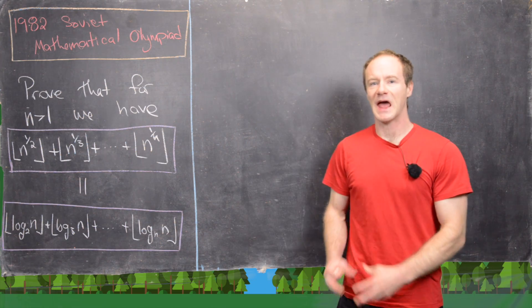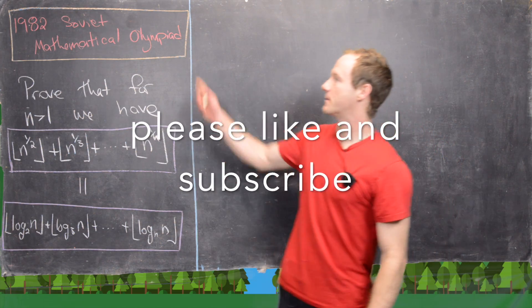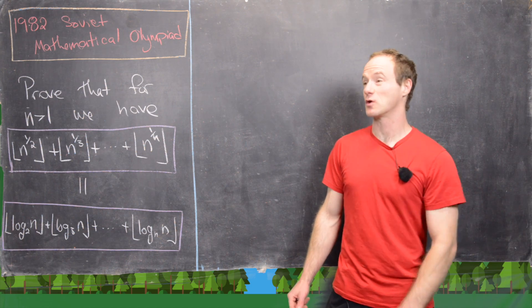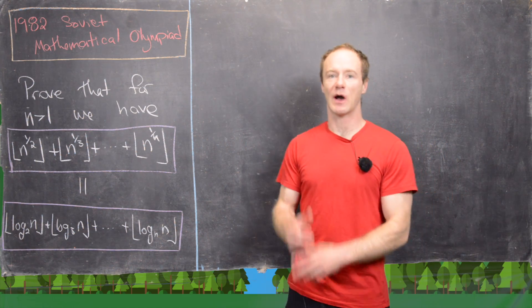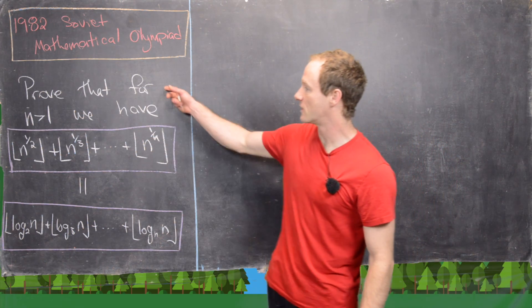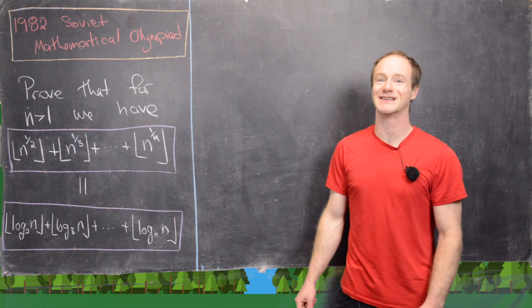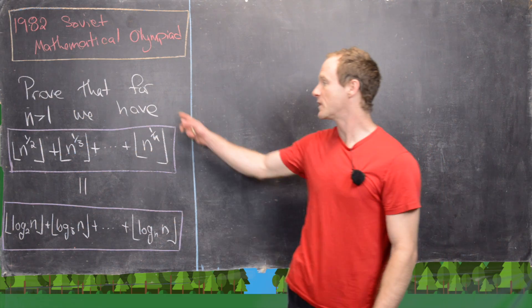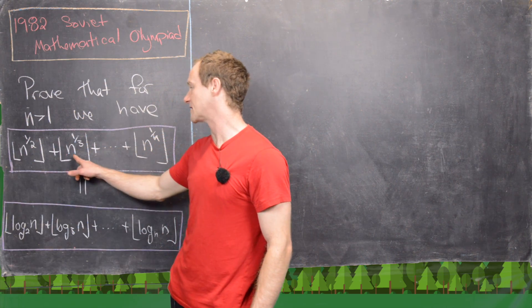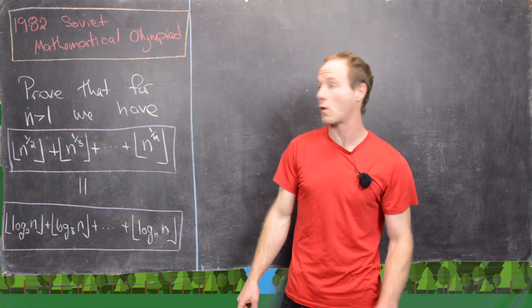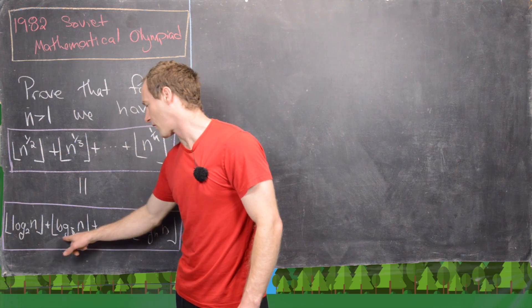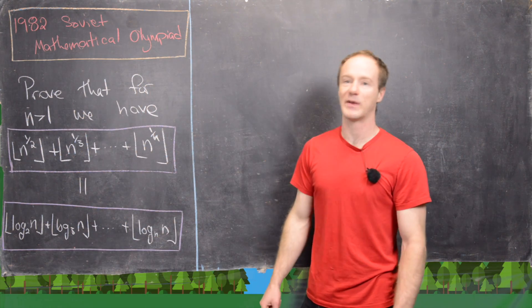Here we're going to look at a very classic problem. I've heard that it originally appeared on the 1982 Soviet Mathematical Olympiad, although I can't find an actual copy of that exam, so I don't know that for sure, but that's probably where it first appeared. The statement goes like this: prove that for n bigger than 1 — natural numbers bigger than or equal to 2 — we have the following equality of sums: the floor of n^(1/2) plus the floor of n^(1/3) all the way up to the floor of n^(1/n) equals log base 2 of n plus log base 3 of n all the way up to log base n of n.